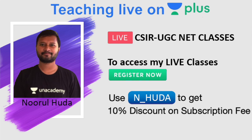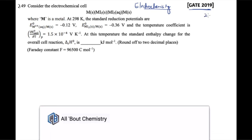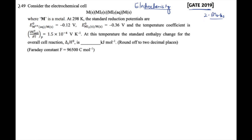Now let's continue with our video. Hello everyone and welcome to the channel. In this particular video I am going to take a question from the GATE 2019 exam — this question was from the electrochemistry portion. I will try to explain how you can easily solve this question with the given information, and what are the different formulas you can extract from it. This was a two-marker question in GATE 2019, so it carries good weightage. It is also the only question asked from electrochemistry in GATE 2019.